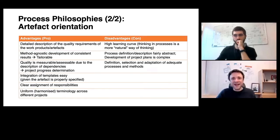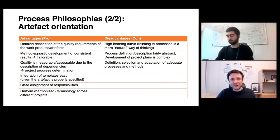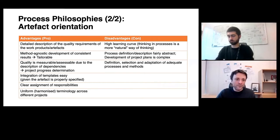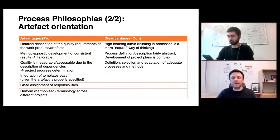Instead of saying how to do things, I say what the outcome of your activities is — I don't care about how you actually elaborate these artifacts, as long as you specify what is defined in my artifact-centric software process model. Artifact orientation has advantages and disadvantages as well. One thing to keep in mind is that the learning curve is higher than with activity-centric approaches, simply because people tend to think in processes.